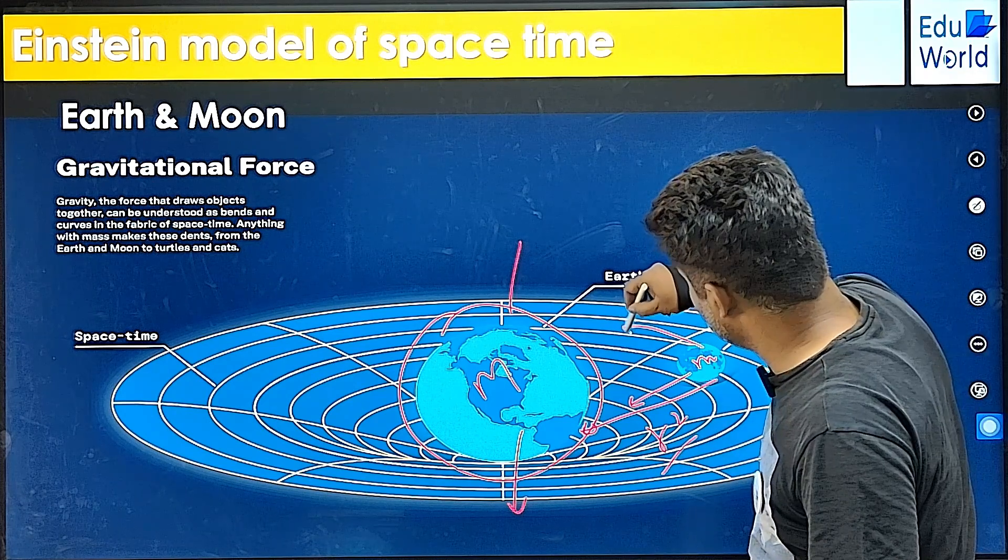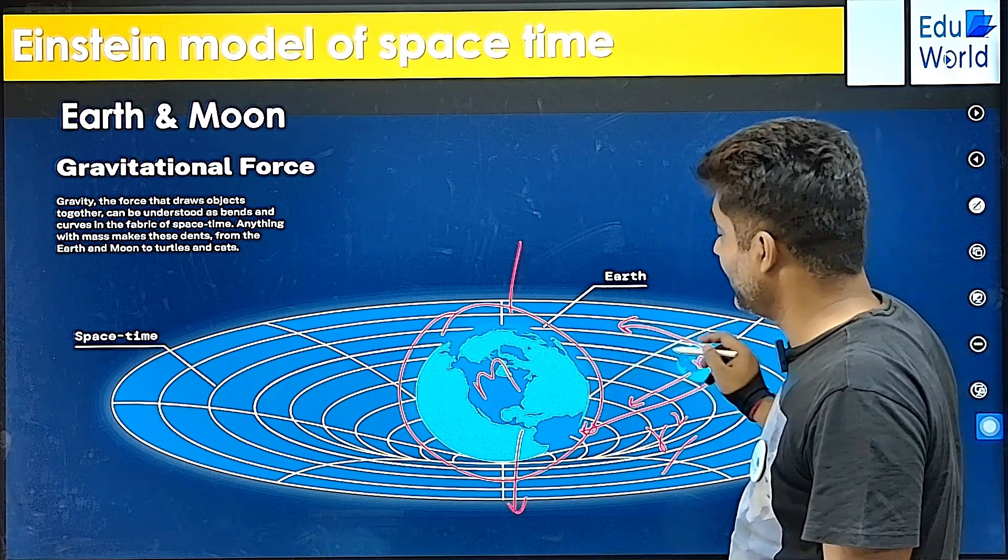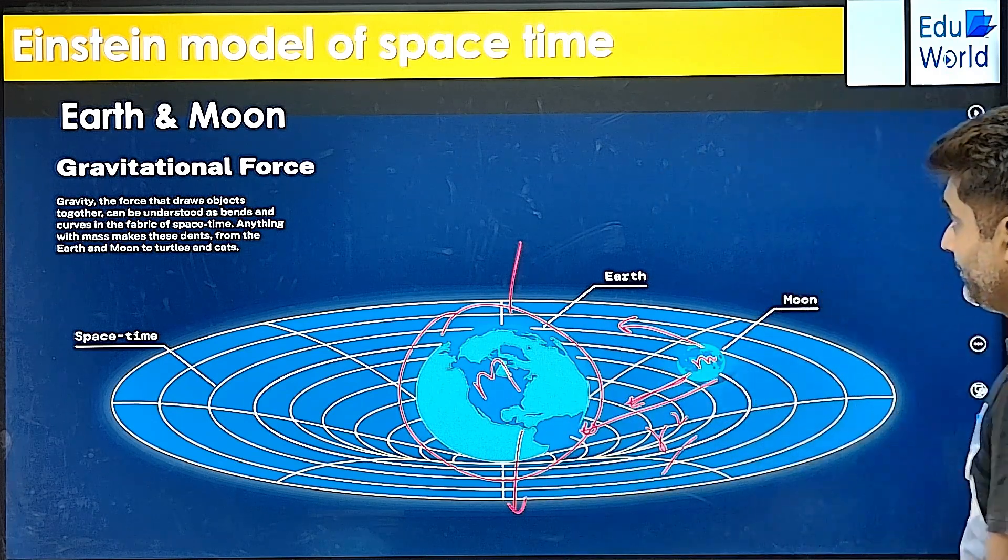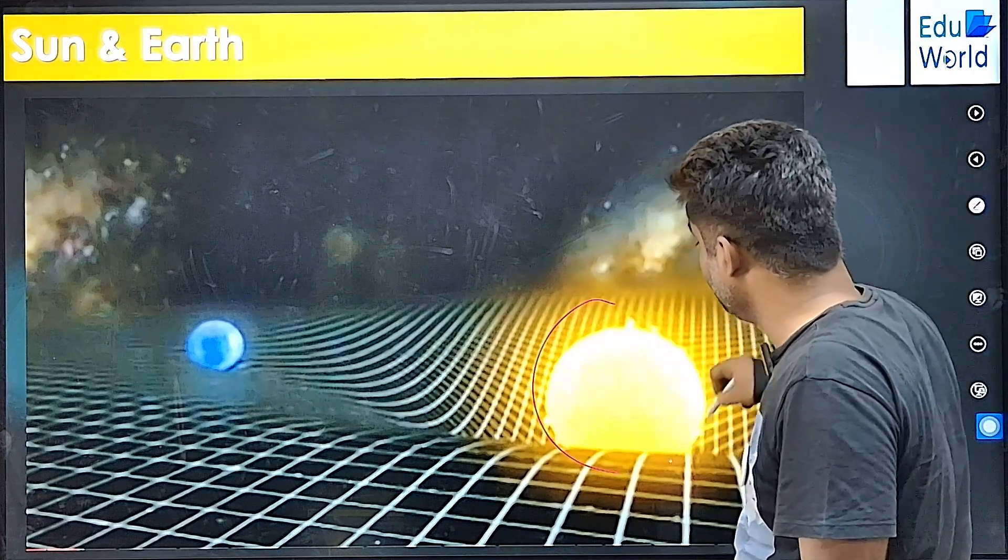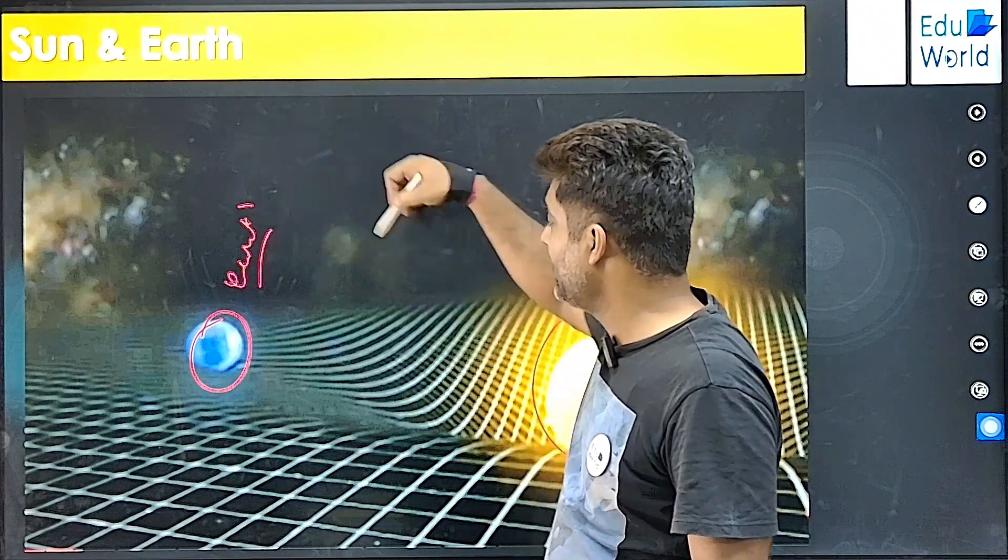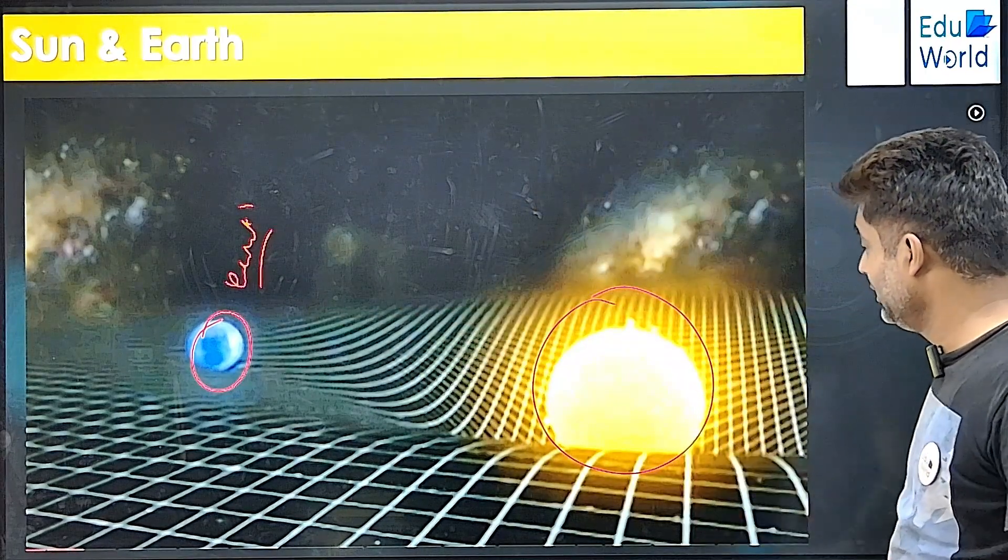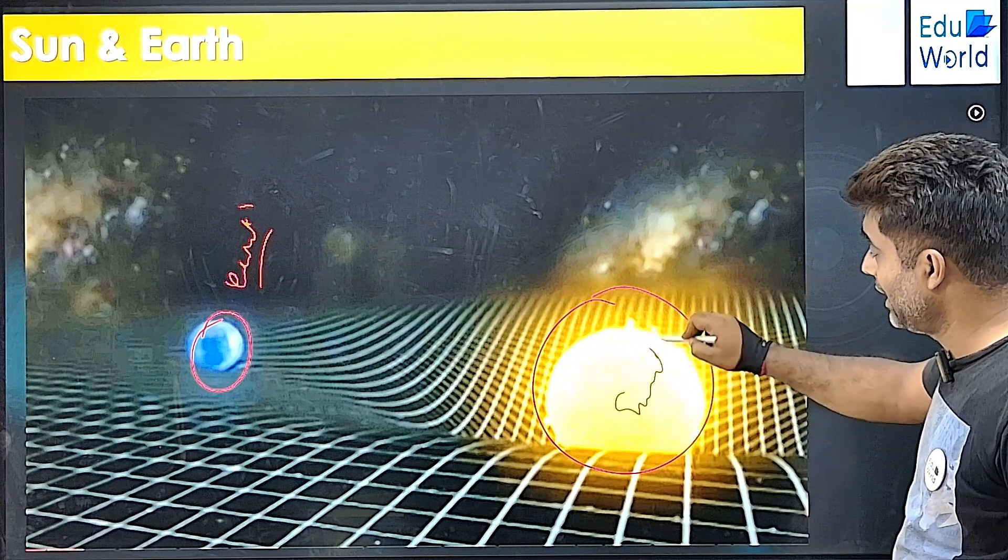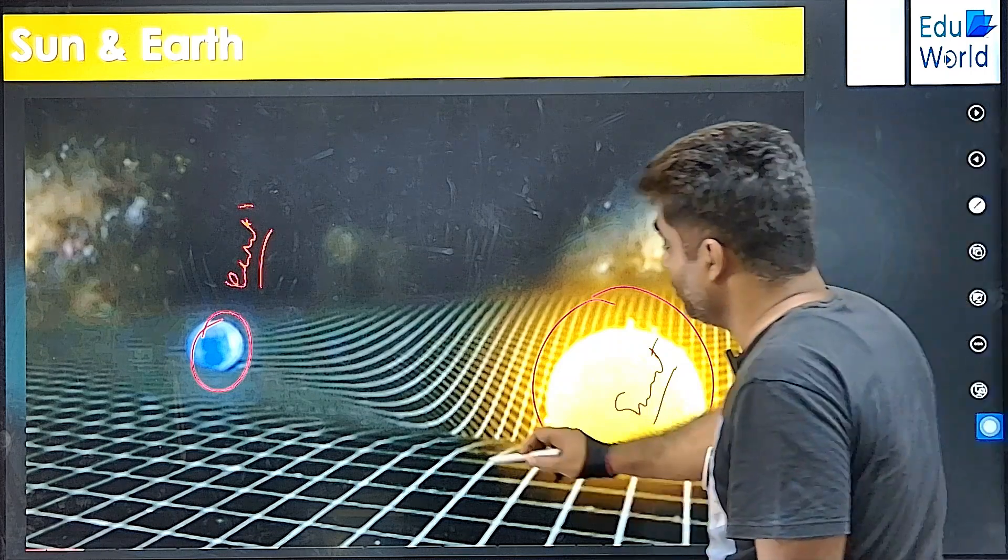And since there is an orbital velocity of this, it is balanced, and it is not being sucked by the bigger mass. This is what we know. And same way, that was the Earth-Moon setup. This is the Sun and the Earth, or it could be any planet. And this is the Sun, the heaviest mass of the solar system. And this is the slope.